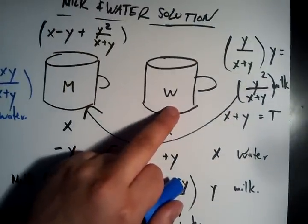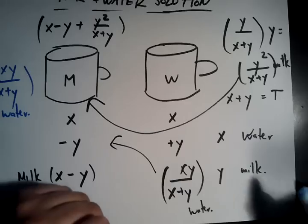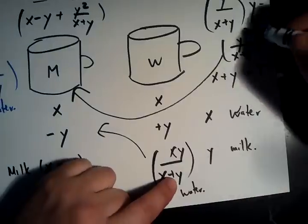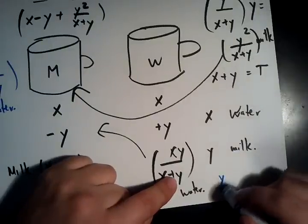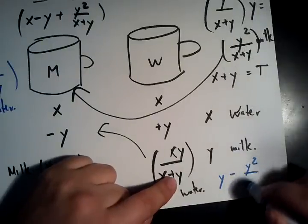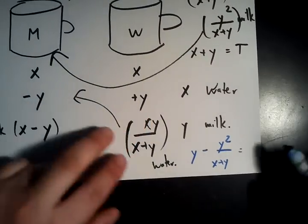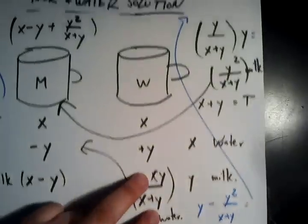And how much milk is in the water jug? Remember, there was y. And then we took away y squared over x plus y. So it's y minus y squared over x plus y. And if we simplify this, let's simplify it up here. It's getting a bit messy.